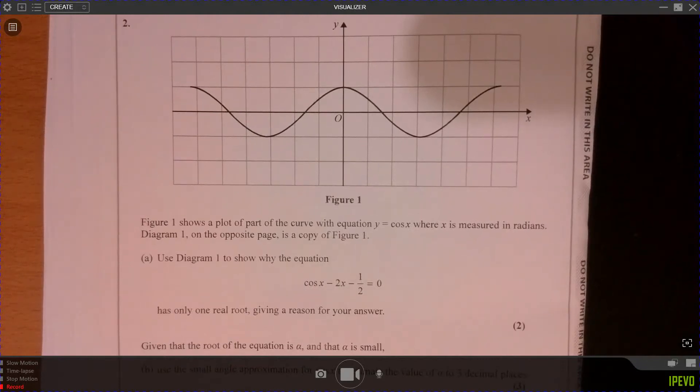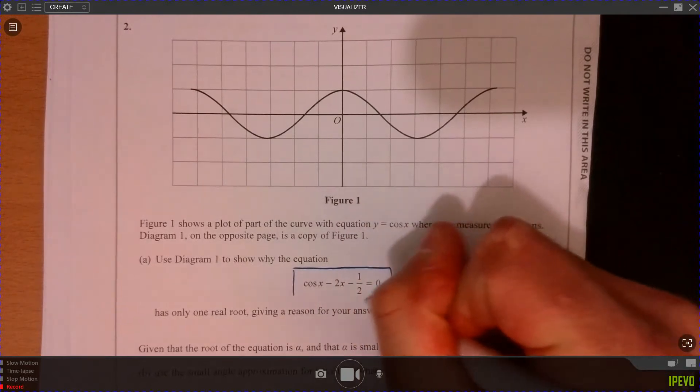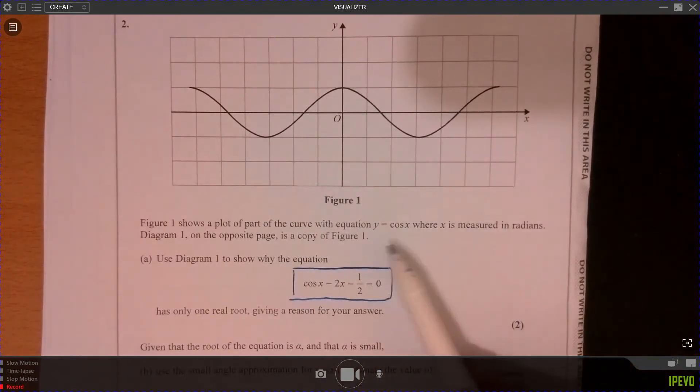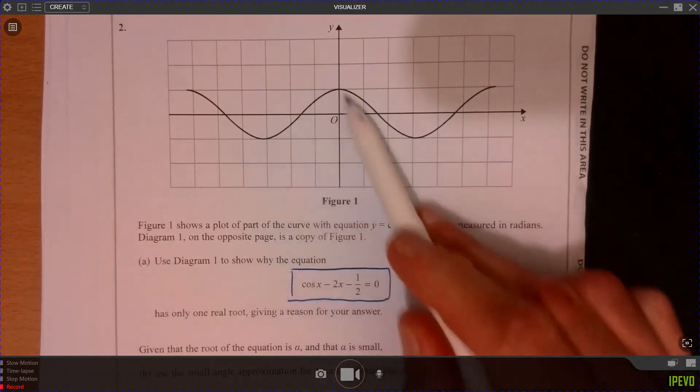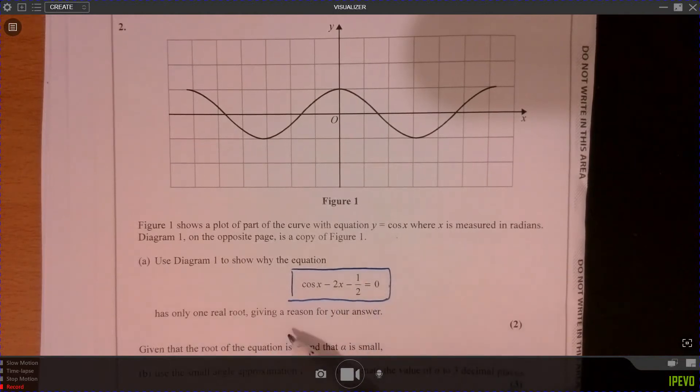Question two. Right, here we go. The key to this here - we've got our diagram at the top here of y equals cos x. Now there's a pretty big clue. We need to find out, looking at this here it says it's only got one root.